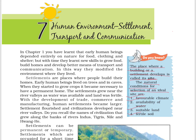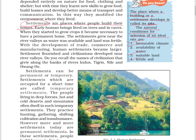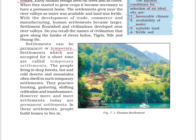Settlements are places where people build their homes. Settlements are of two types: permanent and temporary. Settlements which are occupied for a short time are called temporary settlements. Generally the people living in deep forests, hot and cold deserts, and mountains often dwell in temporary settlements. They practice hunting, gathering, shifting cultivation, and transhumance.